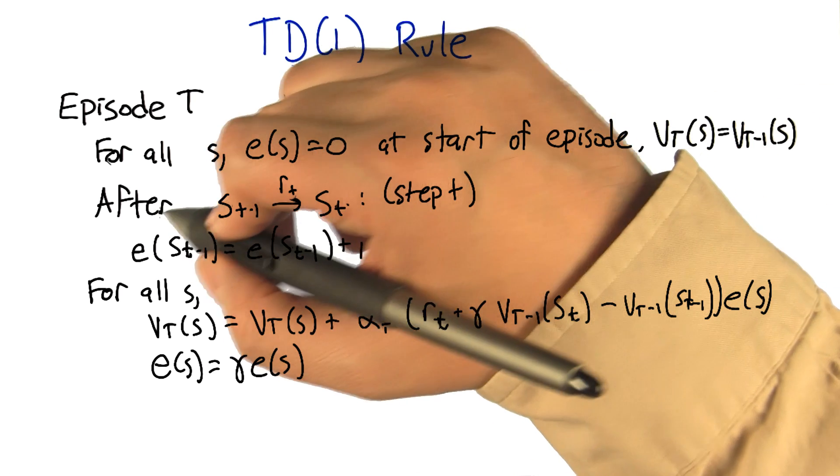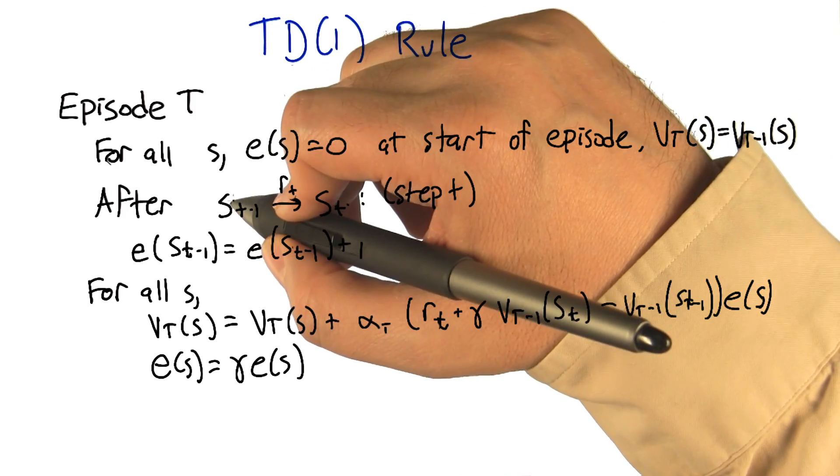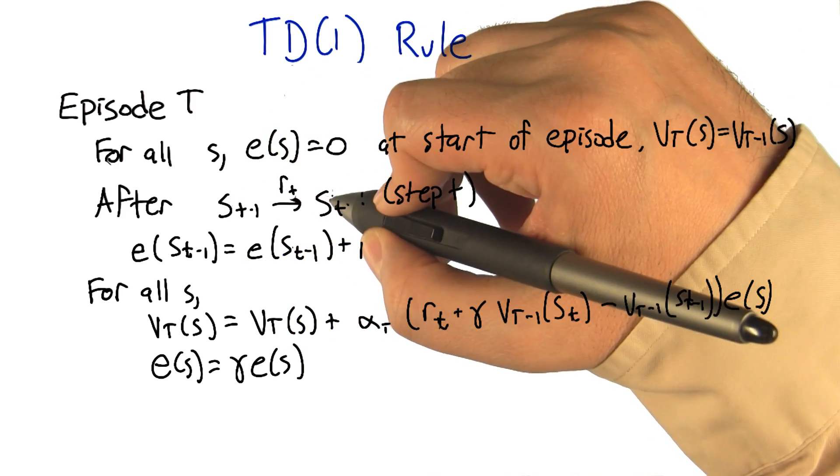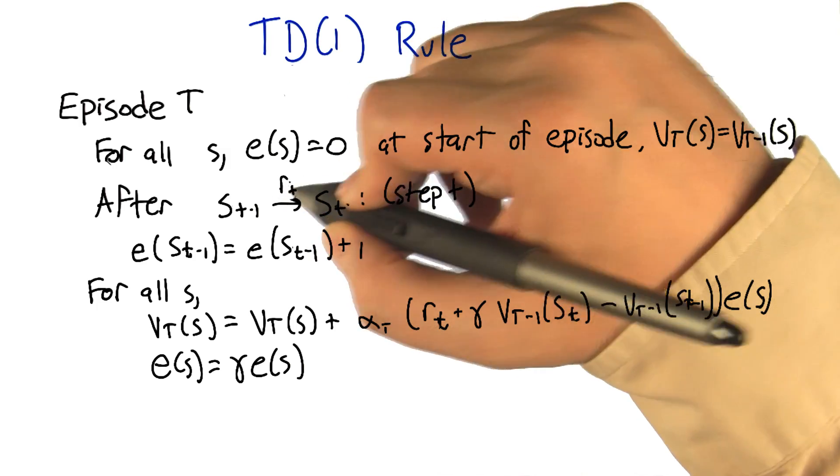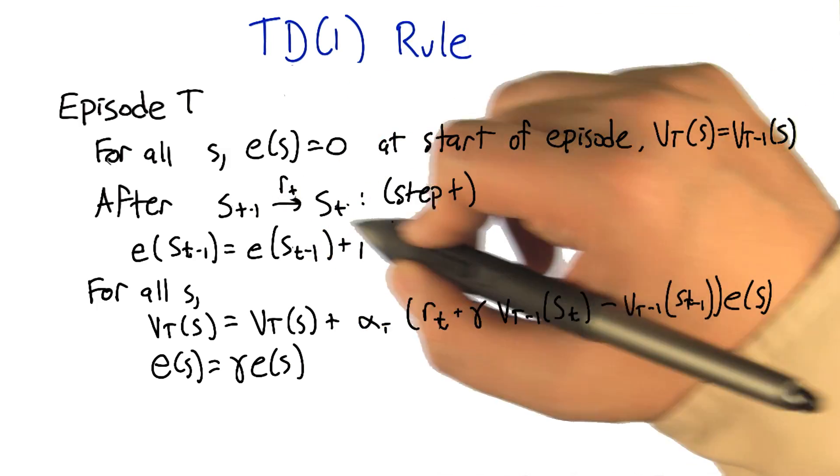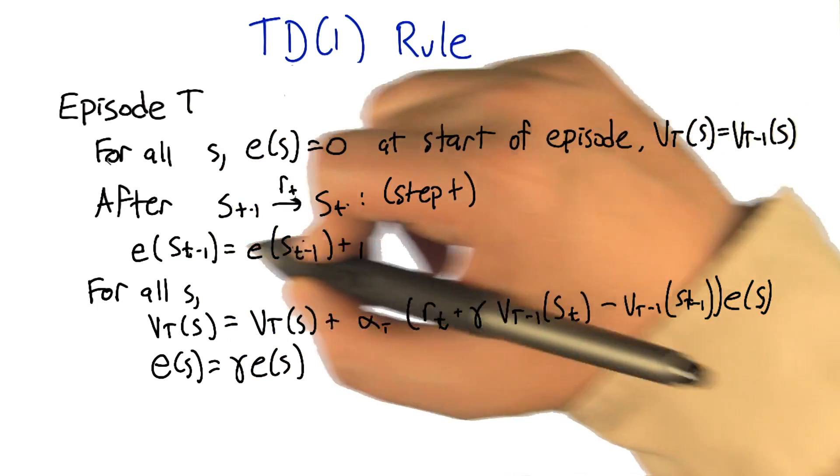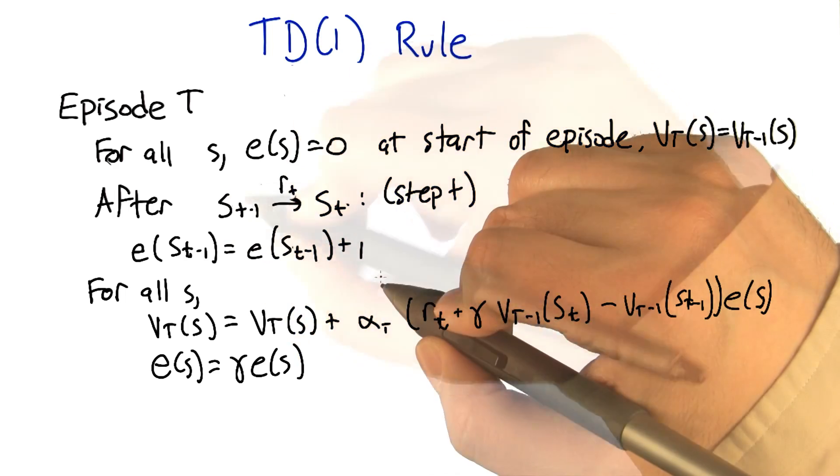So then, each time we take a step within the episode, a step from some s_t-1 to some state s_t, getting reward r_t, what we're going to do is first update the eligibility of the state that we just left.